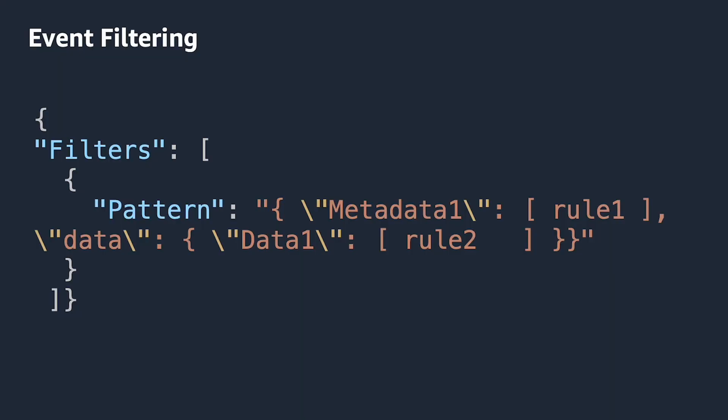For every event source mapping you can define five filters, and if a record satisfies one or more of these filters it will get sent to the function. The filter looks something like this — you can define filters as JSON representations when you define the event source mapping. These filters work very similarly to the ones we've seen with pipes and other filters in AWS. Here we can see a filter where metadata one matches a rule and data matches another rule — something very simple. But you can also do more complex filters; see the documentation for details.